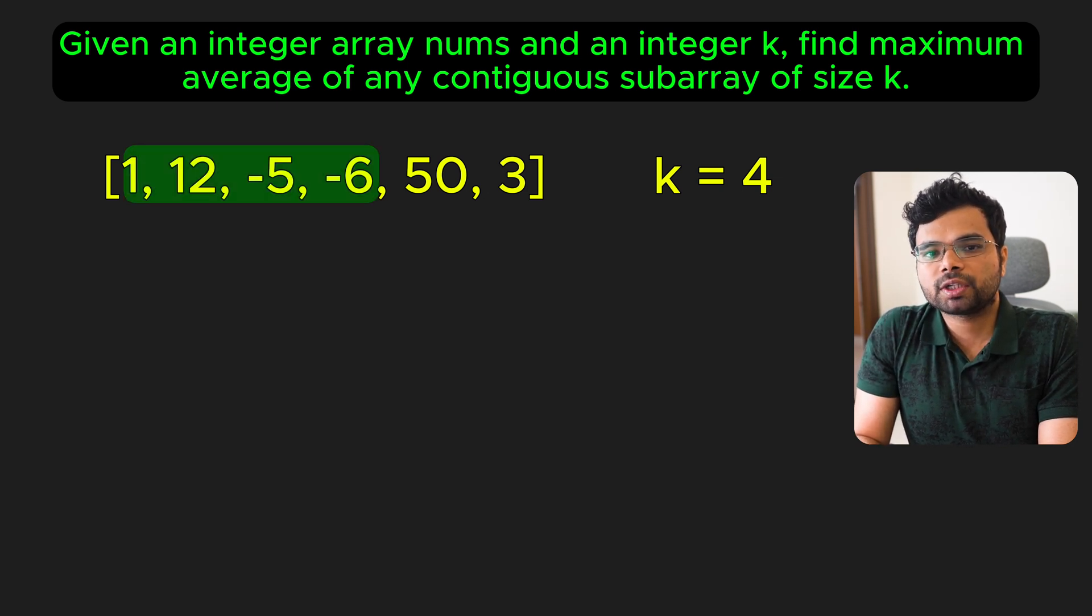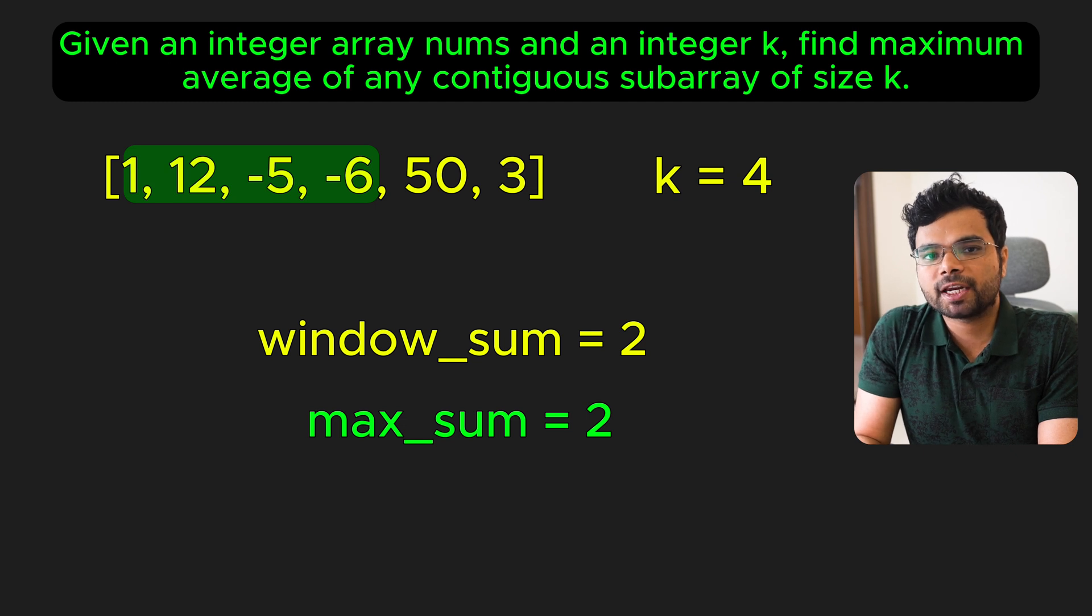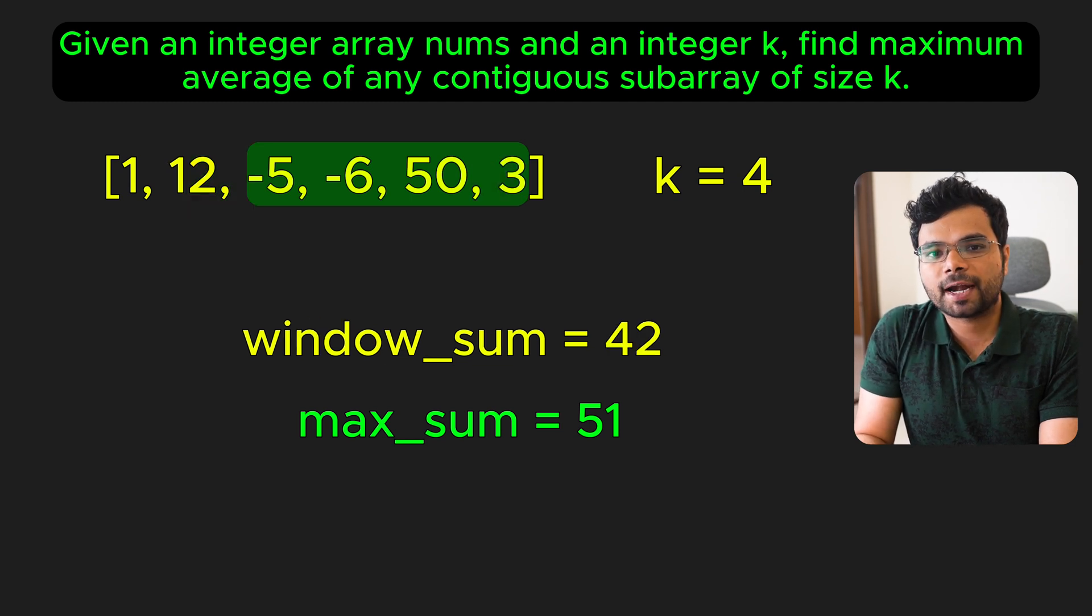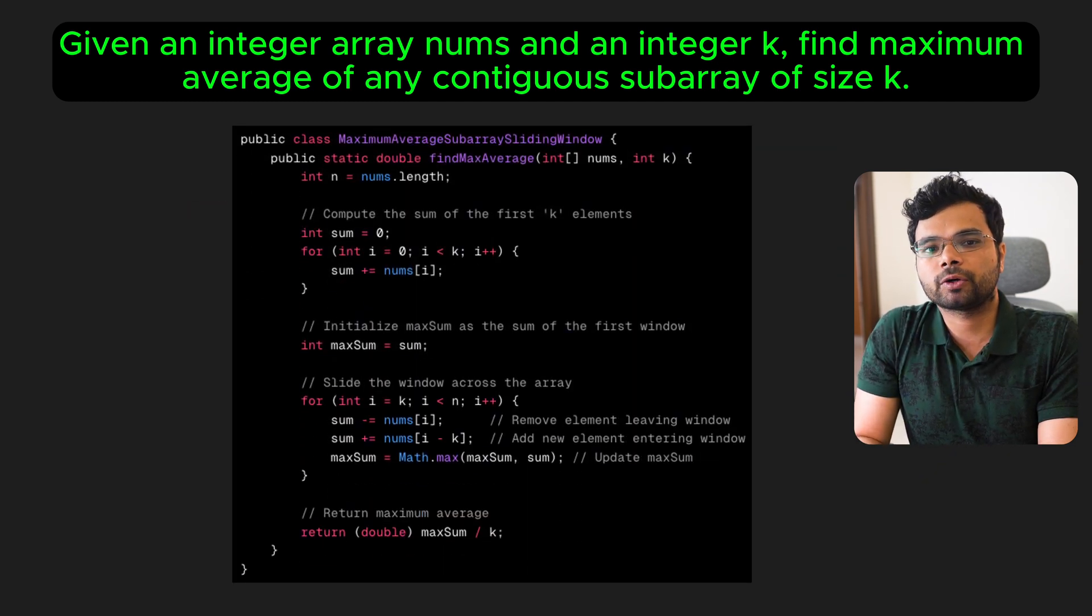Here is the key idea. Use a window of size k that slides one element at a time. Update the window sum dynamically by subtracting the element that's leaving the window, and adding the element that's entering the window. Here is how it looks like in code.